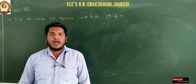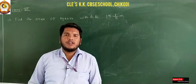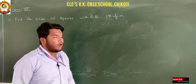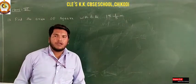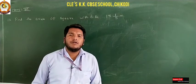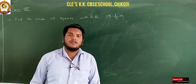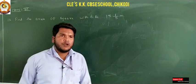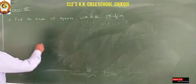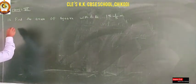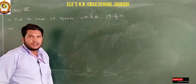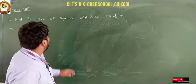Hello dear students, welcome back to Class 7. In the last class we started with Exercise 2.1 on word problems. I solved some problems in the previous video, and in this video you are going to learn more examples. The 13th question says: find the area of a square with side 15 and 1/5 meters.